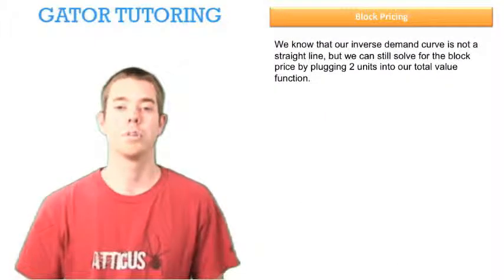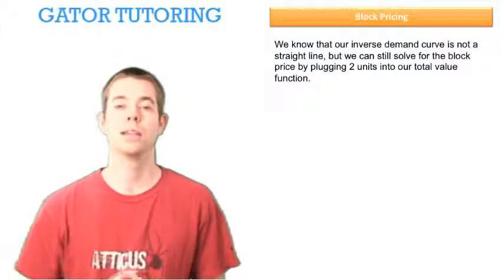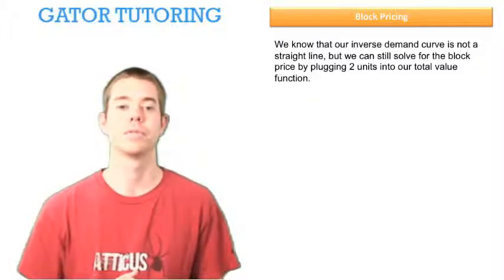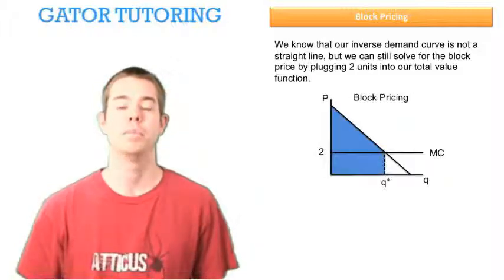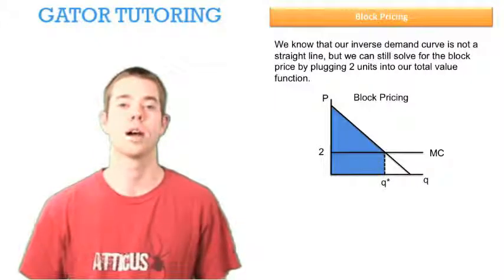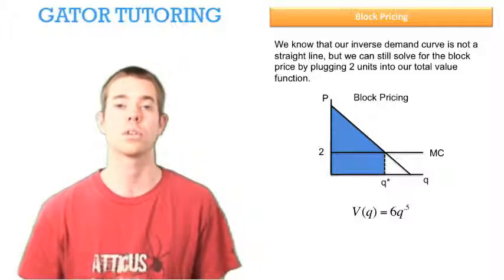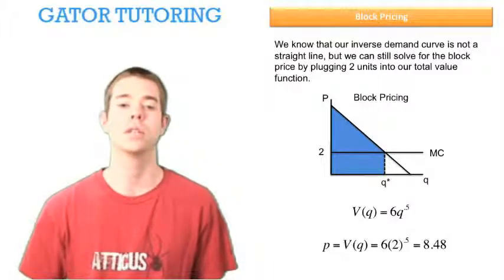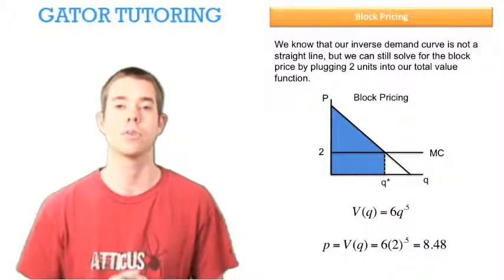So now that we know that we want to produce two units, we remember that we're not dealing with a linear inverse demand curve, but we can still use the same method to solve. We need to find the block price by plugging in two units to our total value function, because that's going to give us that whole blue area shown in the graph. So starting from our total value function of 6 times the square root of Q, we plug in two units, and we find that our block price, in this case, is equal to $8.48.